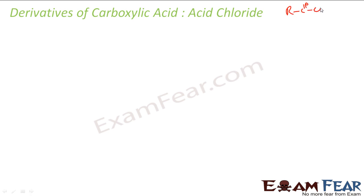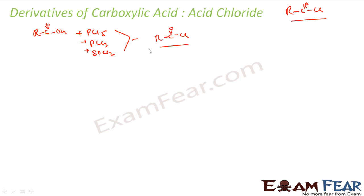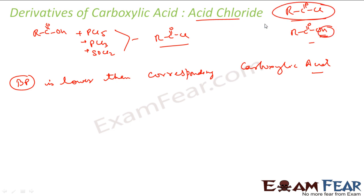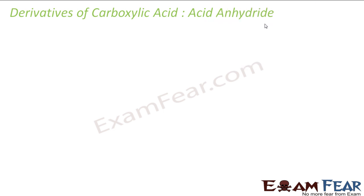Acid chlorides have the form RCOCL. To form them, you take RCOOH and react with PCL5, PCL3, or SOCL2 to get RCOCL. We've discussed this mechanism in the carboxylic acid reactions section. The boiling point of acid chloride is lower than the corresponding carboxylic acid because there is no hydrogen bonding, whereas carboxylic acid has strong hydrogen bonds.